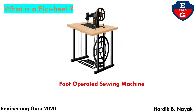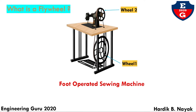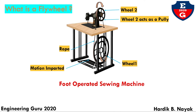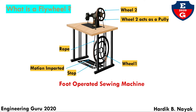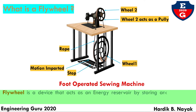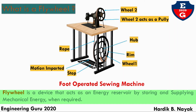First, what is flywheel? Consider a foot-operated sewing machine. It consists of two wheels, wheel 1 and wheel 2, connected by a rope. When motion is imparted to wheel 1, the rope transfers the motion to wheel 2. This wheel 2 acts as a pulley and runs the sewing machine. When we stop supplying the driving force to wheel 1, it still continues to run for a short time because of the inertia it possesses. Flywheel is a device that acts as an energy receiver by storing and supplying mechanical energy when required.